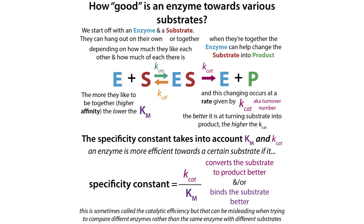If an enzyme likes one substrate better because it binds it more tightly, that substrate would have a lower Km and therefore a higher specificity constant. If an enzyme is better with a substrate because it can turn it over faster, then the Kcat for that substrate would be bigger, and the specificity constant for that substrate would be bigger as well.